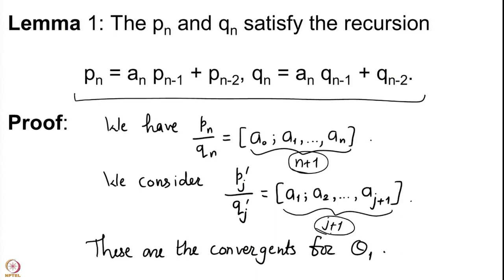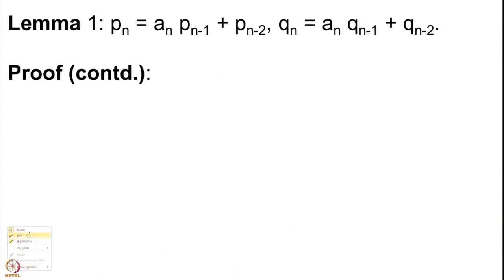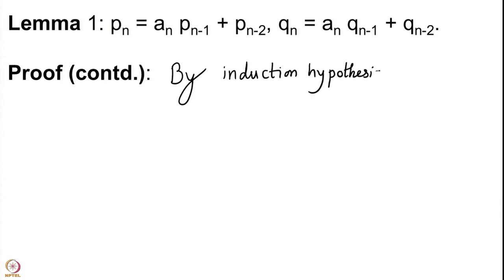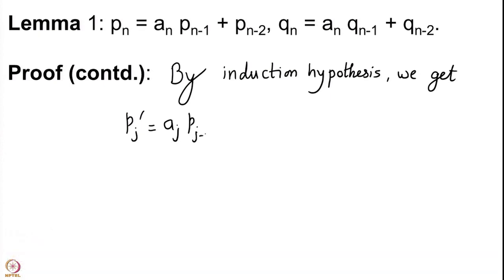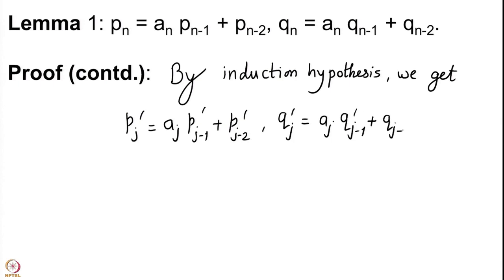We apply the induction hypothesis at j+1 = n, so we assume: p'_j = a_j * p'_{j-1} + p'_{j-2} and q'_j = a_j * q'_{j-1} + q'_{j-2}. Note that a_n was the last integer in the expansion, so we replace a_j by a_{j+1} in both expressions for p'_j and q'_j. This holds for j from 1 up to n-1 by the induction hypothesis.